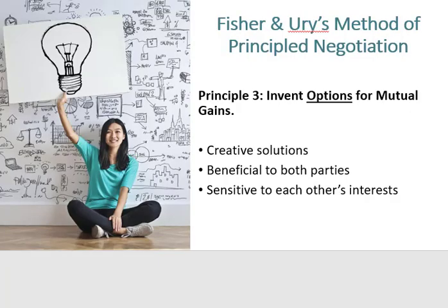Third, invent options for mutual gains. Think of creative solutions that can benefit both parties. When both sides are sensitive to the other party's interests, you can make it easier to find solutions. But note, this step is impossible unless you engage in the first two steps of separating people from the problem and focusing on interests, not positions.